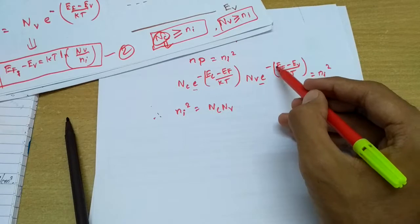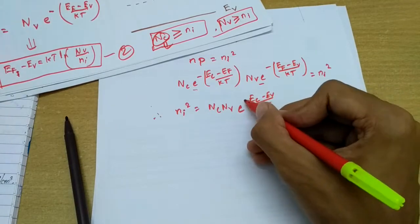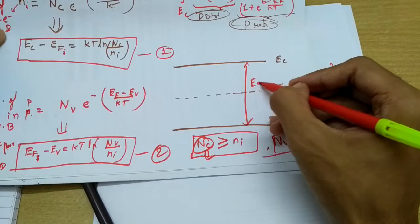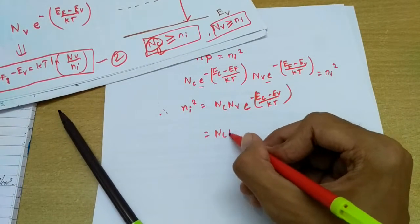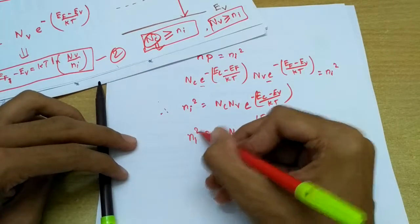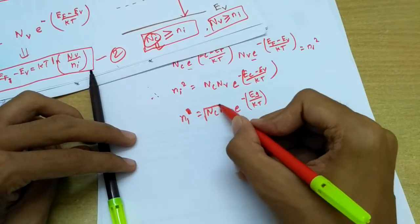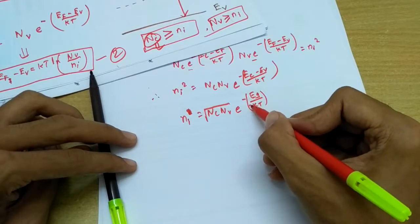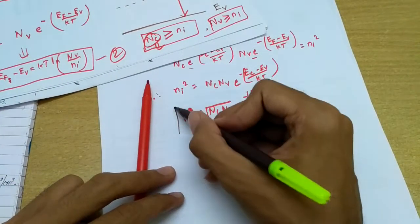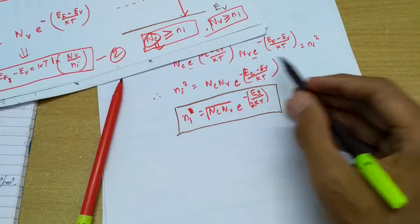After cancellation, we are left with e^(-(Ec - Ev)/kT). The gap Ec - Ev is called the band gap, denoted Eg. So ni² = nc·nv·e^(-Eg/kT), which gives us ni = √(nc·nv)·e^(-Eg/2kT). This is a very important relation.